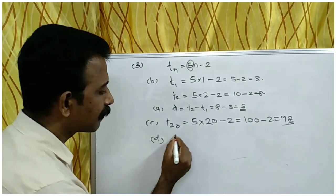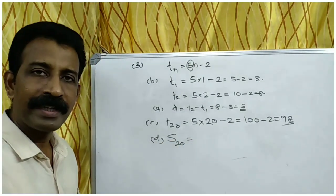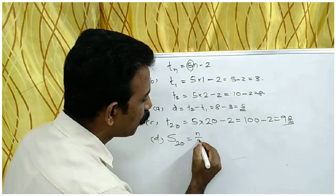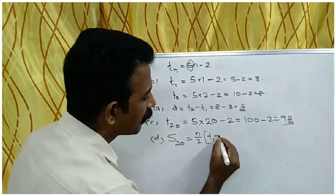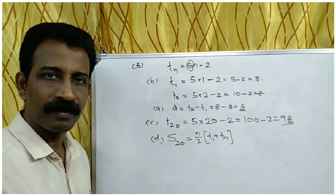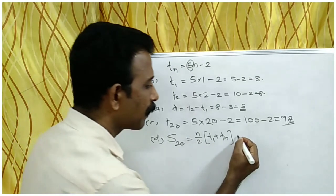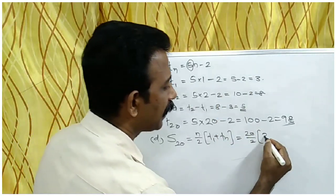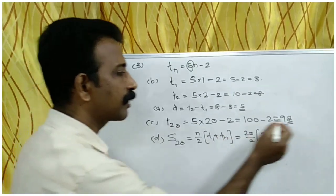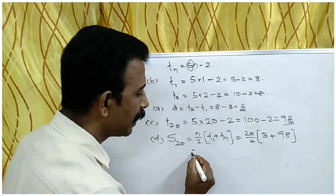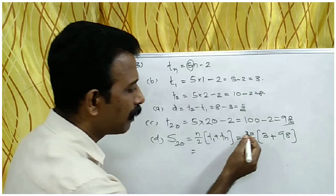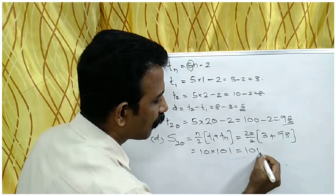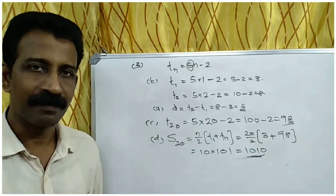For part D, find the sum of the first 20 terms, S20. Using the formula N by 2 into T1 plus Tn: that is 20 by 2 into 3 plus 98, which equals 10 into 101 equals 1010. So 1010 is the sum of the first 20 terms.